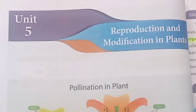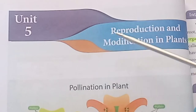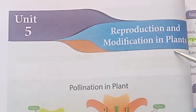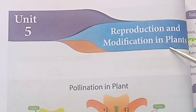Standard 7, Term 1, Science, Unit 5: Reproduction and Modification in Plants. Part 4, Video Part 3 — Modification of Stem and Modification of Leaf.